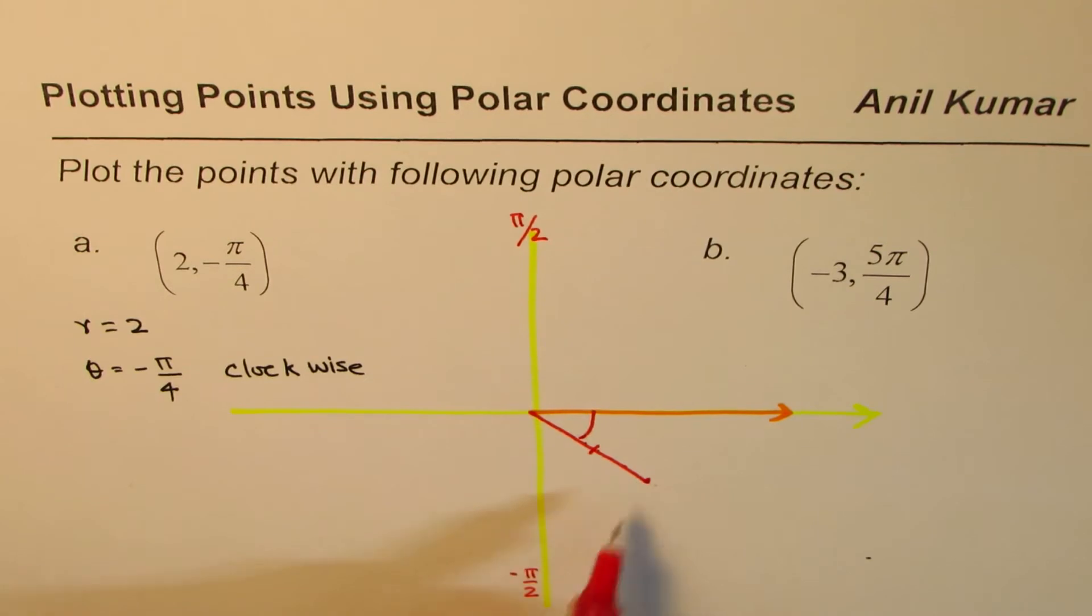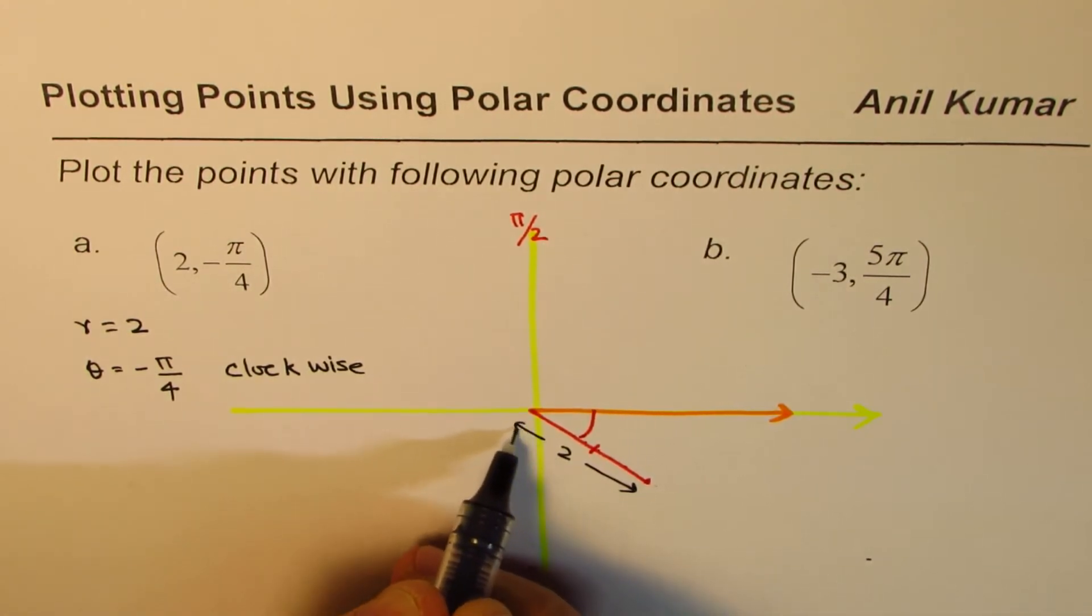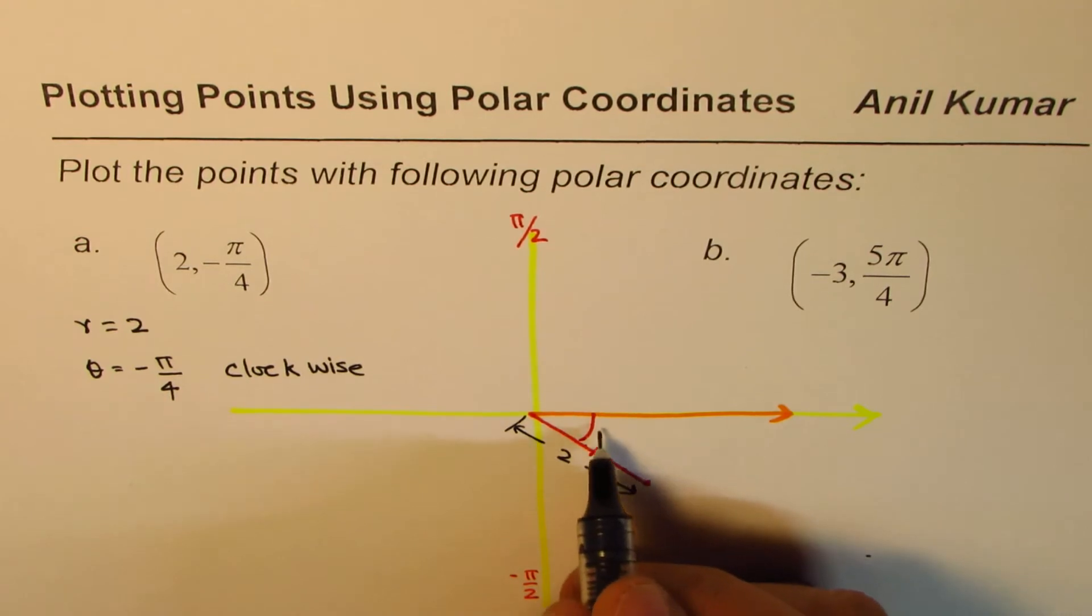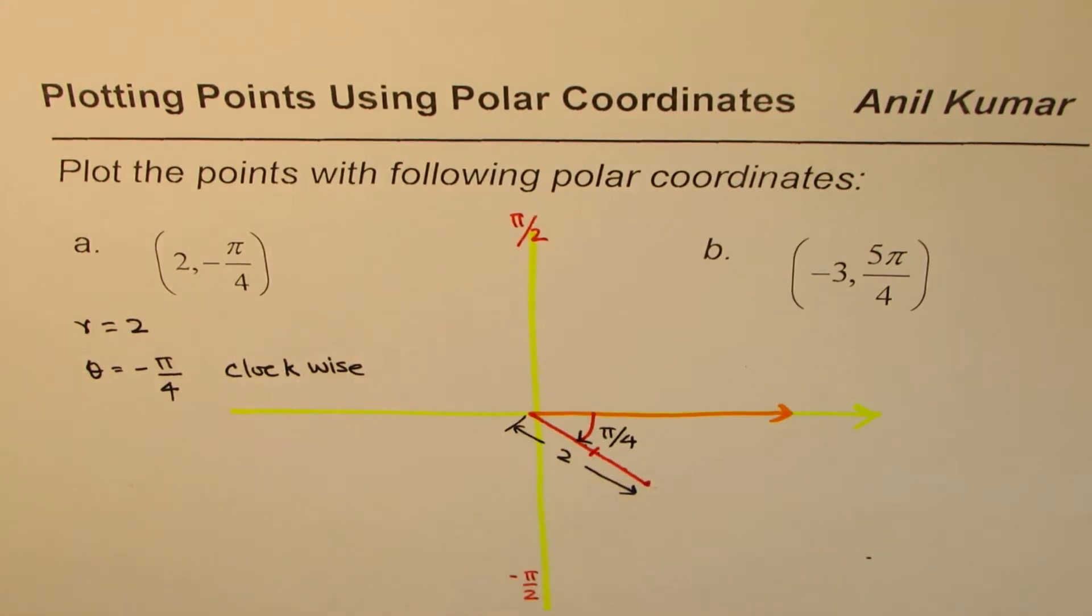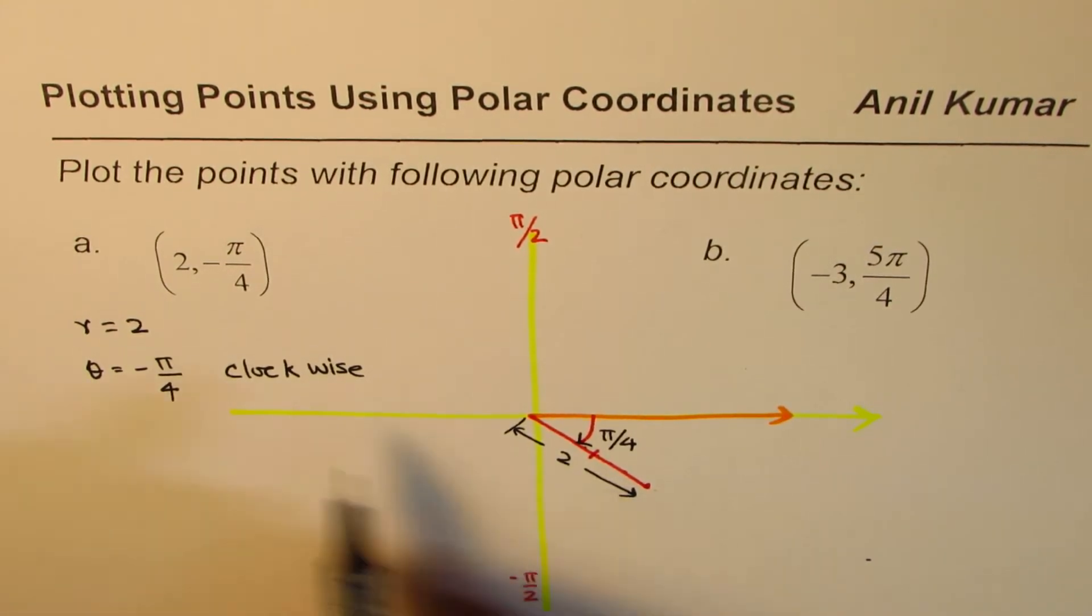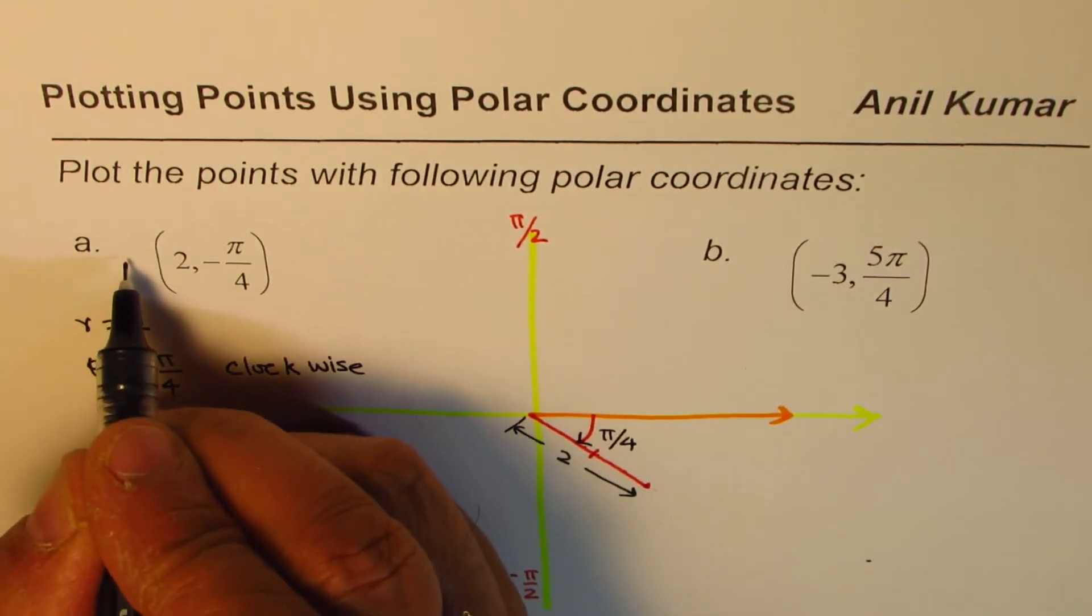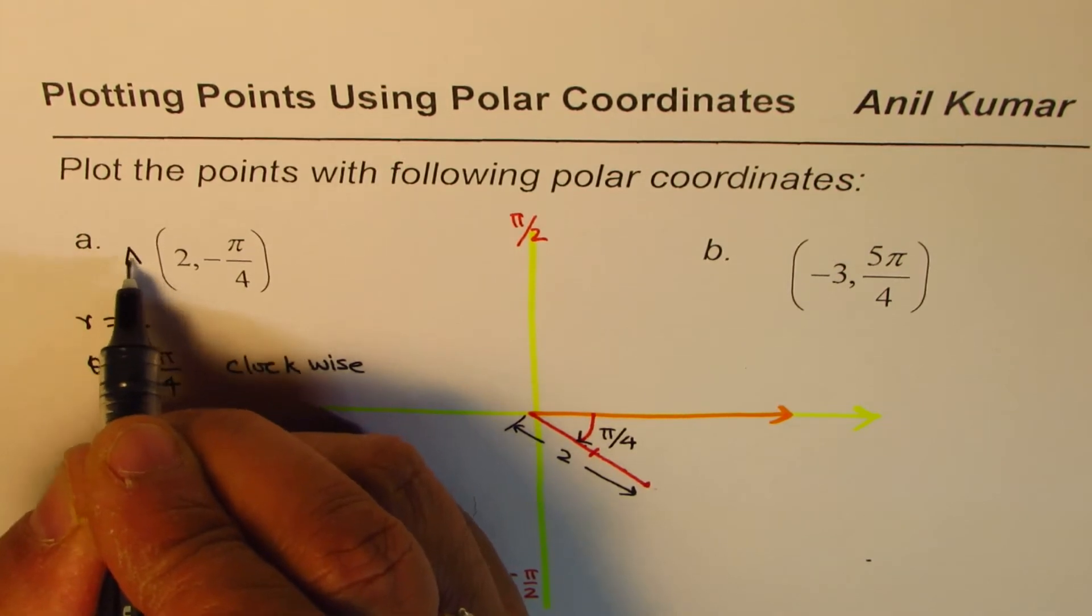So this distance becomes 2 units from here to here. That is 2 units and the angle is π/4. Since it is taken in clockwise direction it will be considered negative. So that is how we could plot the given point. Let's call this point as A. In that case this point will be A.